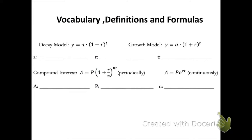First, let's start off with some formulas. We'll start with the decay model and the growth model. Notice they look identical except the decay model has a minus sign in front of the r and the growth model has a plus sign in front of the r. Decay would be a subtraction, growth would be an addition.